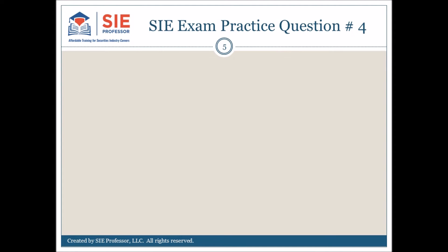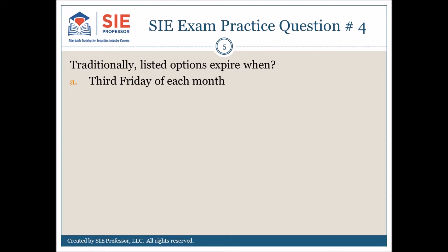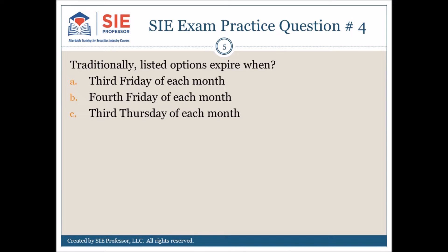SIE exam practice question number 4. Traditionally, listed options expire when? A) Third Friday of each month, B) Fourth Friday of each month, C) Third Thursday of each month, or D) Fourth Thursday of each month. Pause here to consider your choices and mark your answer.